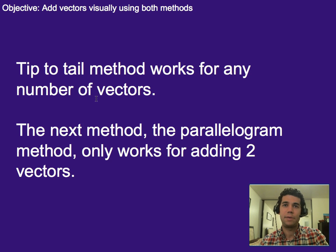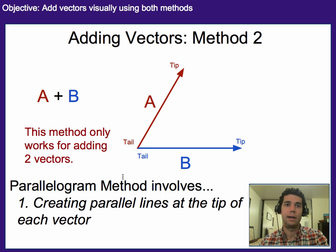So the tip-to-tail method works for any number of vectors: two vectors, five vectors, two million vectors, it doesn't matter. The next method I often use myself more often than tip-to-tail. The reason is because I usually can get a more accurate drawing if I'm just doing this on paper, but the limitation is that it only works for adding two vectors at a time. So here's the next method, and it's called the parallelogram method, and we'll find out why in a second.